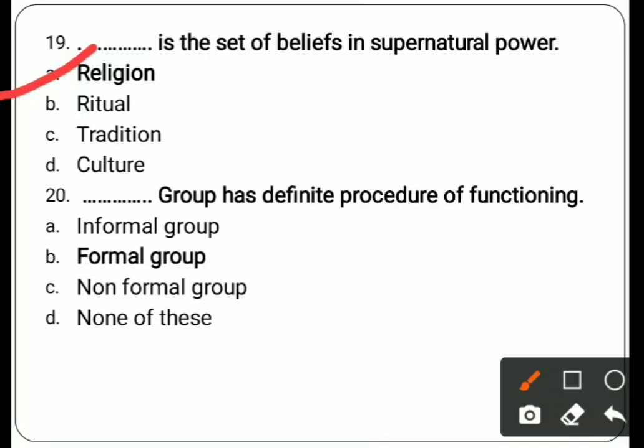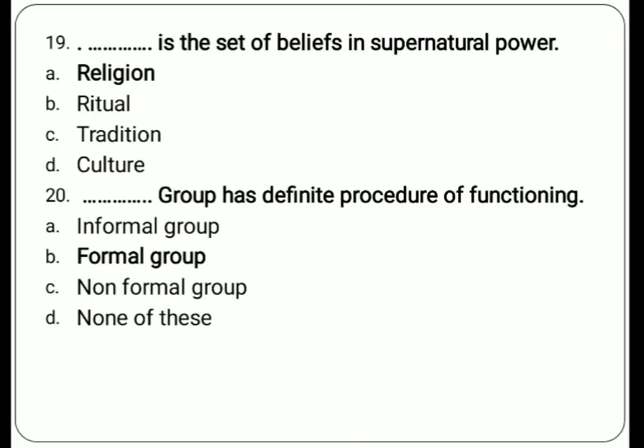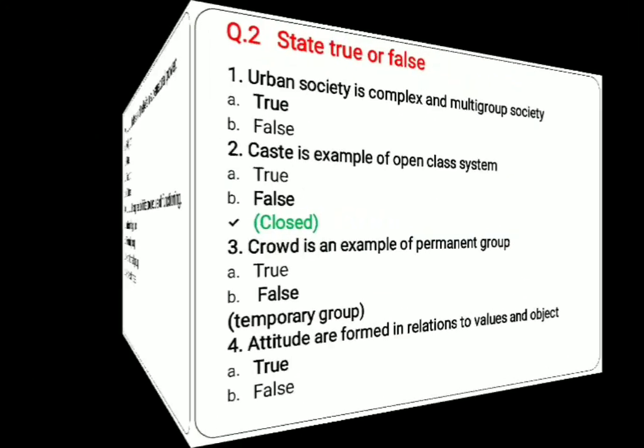Twentieth question: dash dash group has a definite procedure of functioning. Options are informal group, formal group, non-formal group, none of these. Correct answer is formal group — formal groups have a definite procedure of functioning with rules and regulations.